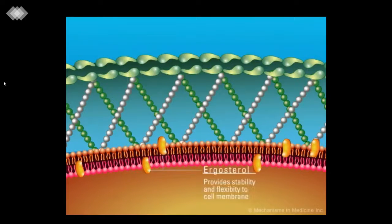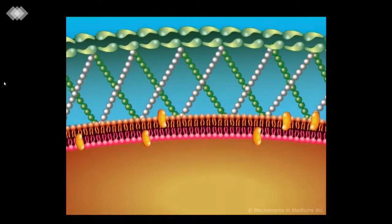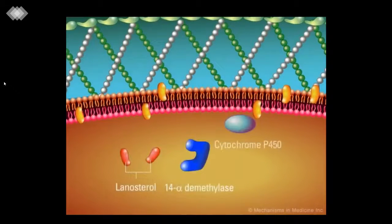One of the essential sterols in the fungal cell membrane is ergosterol. In most fungi, it replaces the cholesterol component found in higher eukaryotic cell membranes. Ergosterol provides stability and flexibility to the fungal cell membrane. Lanosterol serves as the precursor for the formation of ergosterol.